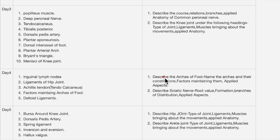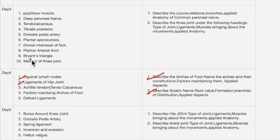For day four, the first essay question is adductor canal, which is a very very important question. Sciatic nerve is also very important. Inguinal lymph nodes is an important question. Other topics include: ligaments of the hip joint, maintaining arches of the foot, and the twelve related elements — all these are very important questions.